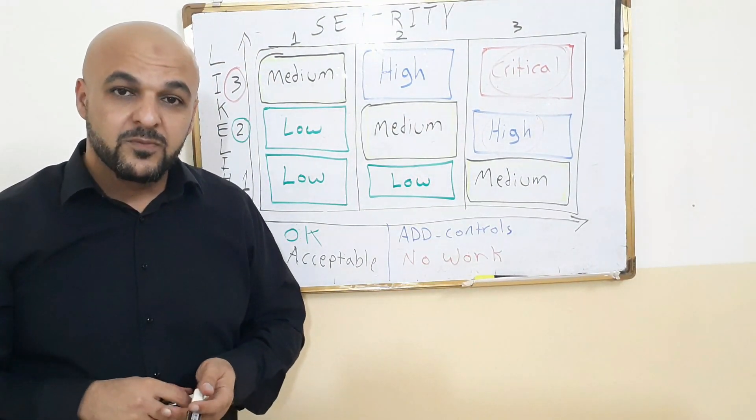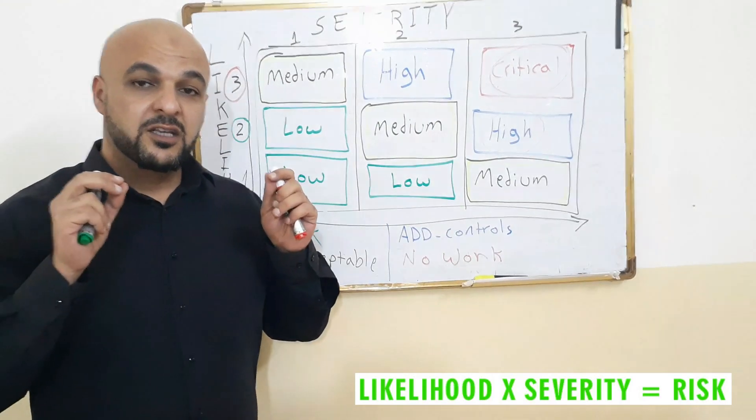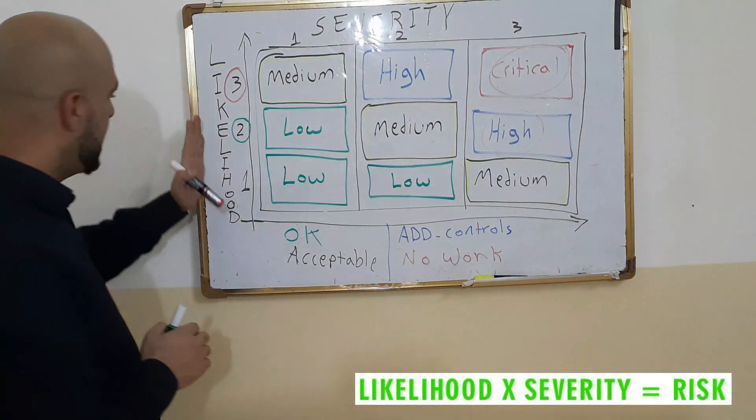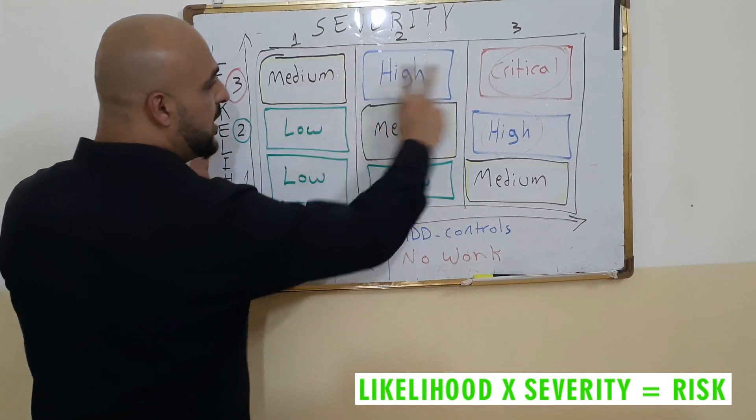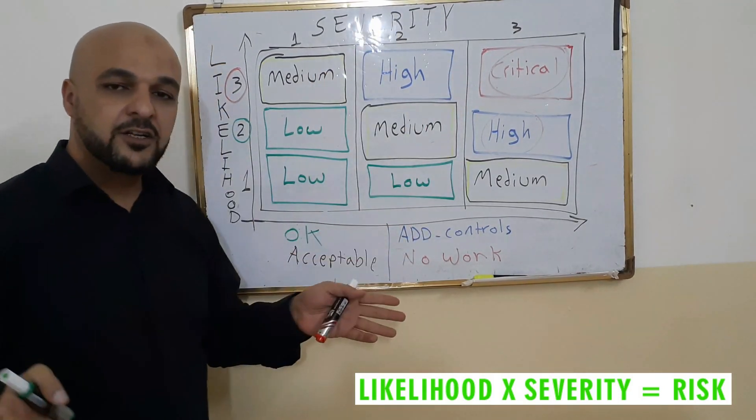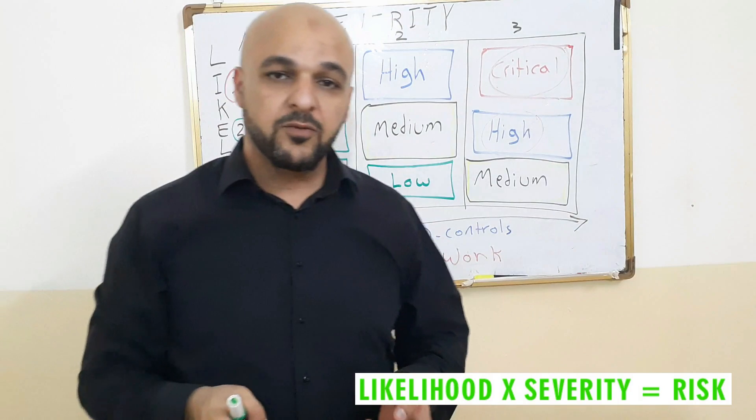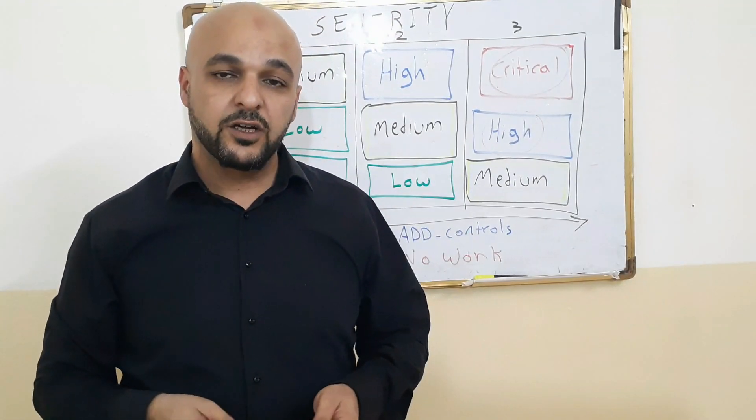What matters is, what matters is, you need to understand that this is how you have to calculate it. The likelihood multiplied by the severity, you will get the number, and that is the outcome of the risk, or that is the level of the risk.